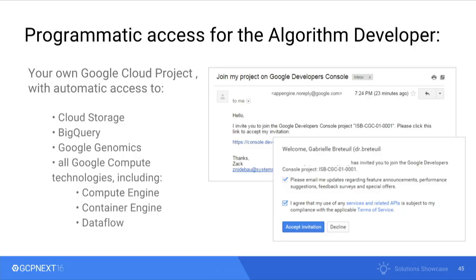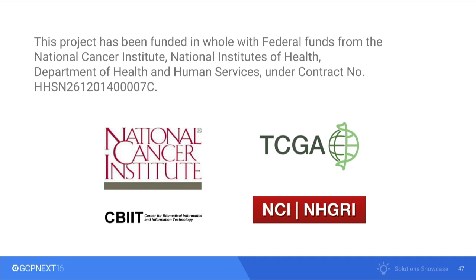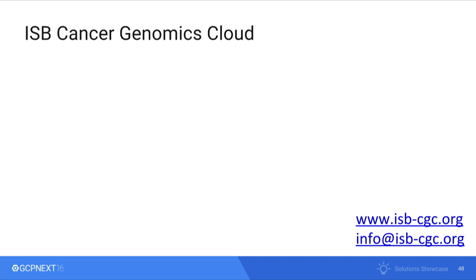This is transformational for research — it opens up possibilities of analyzing very large datasets quickly, getting answers, and using those answers to ask the next question, because research is an iterative process. If you're an algorithm developer, you own your own Google project with automatic access to Cloud Storage, BigQuery, the Google Genomics API, Compute Engine, Container Engine, and Dataflow. You can also use the Cloud Endpoints API backed by App Engine. I'd like to acknowledge the National Cancer Institute for funding these projects, and I invite you to visit the ISB CGC. Thank you.